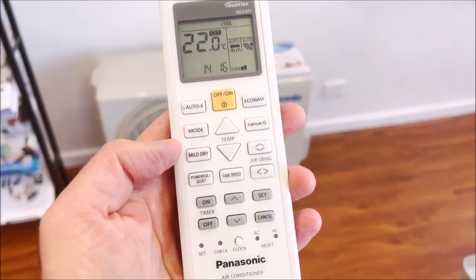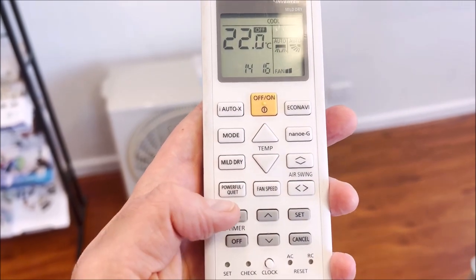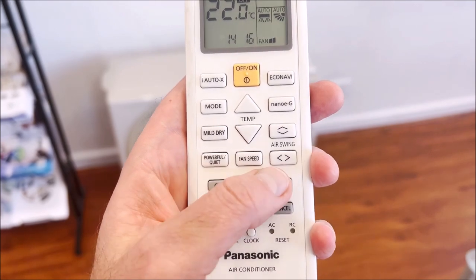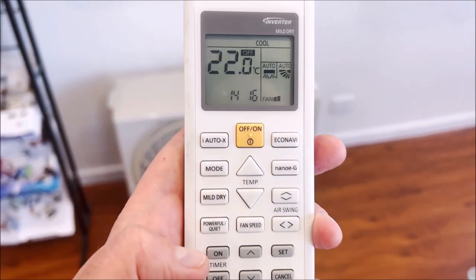The first thing we need to do to set the timer—it's really these gray buttons down here that you'll see—you've got on, off, up arrow, down arrow, and set. You've also got a cancel button here.